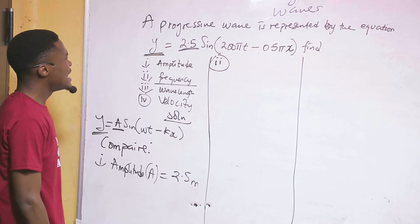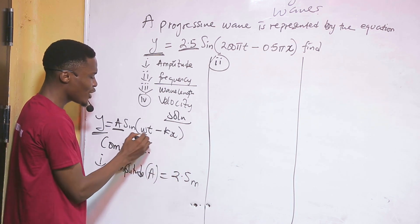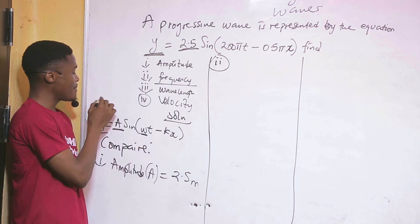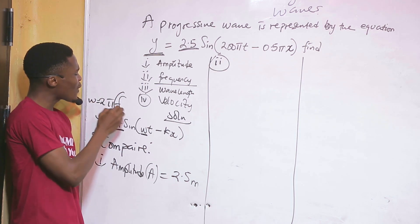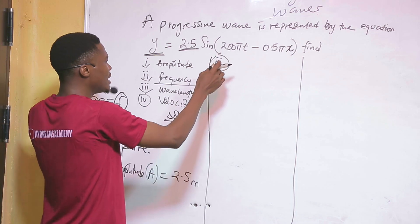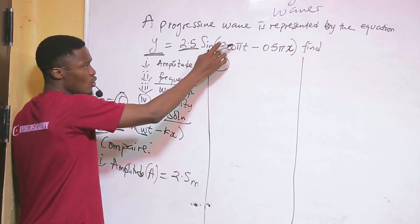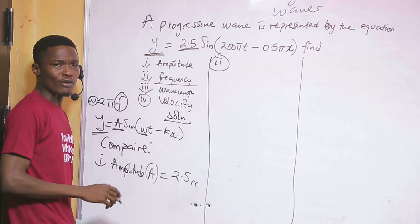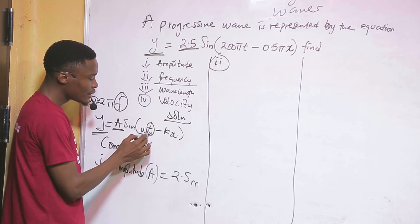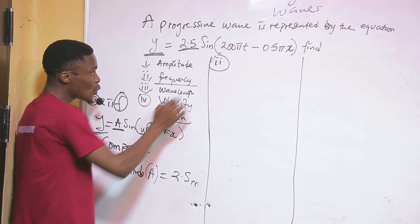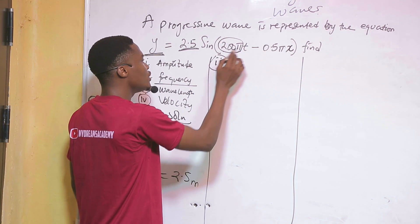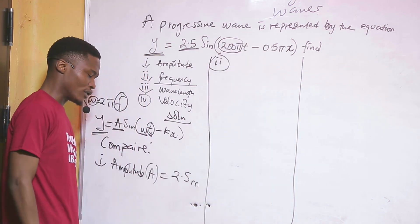To find frequency, remember that ω equals 2πf. In the standard equation, ω appears in front of t. So whatever is in front of t in the given equation is our ω. Looking at the given equation, in front of t we have 200π. Therefore ω equals 200π.